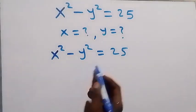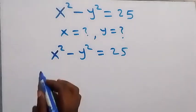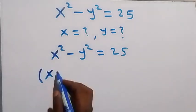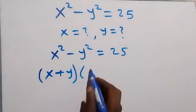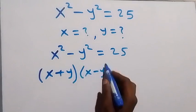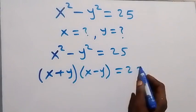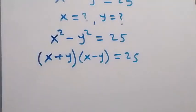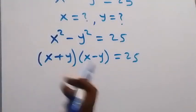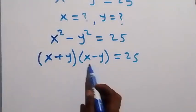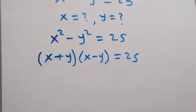Applying difference of two squares here, we want to say this is x plus y multiplied by x minus y, which is equals to 25. Then we have this bracket, of course it will be bigger than this bracket.